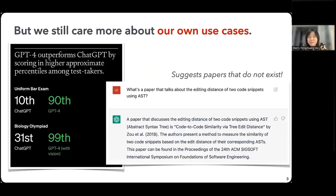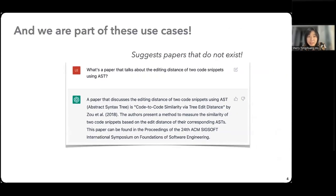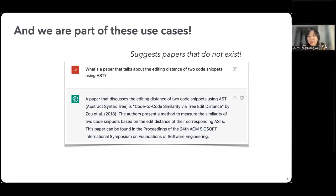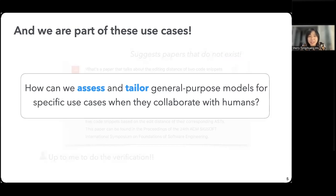But we as users still care more about their local performance on our own use cases. It doesn't really matter if the model can win first place on Biology Olympics if it suggests research papers that don't even exist during my literature review — then it's probably not useful for me at all. Whenever we interact with models and submit a prompt, it's always up to us to verify: is the model giving us something useful, is it even true, can we use it for our actual purposes? So a model being general purpose is amazing, but we face this big issue of how we actually assess and tailor general purpose models for more specific use cases when collaborating with humans.